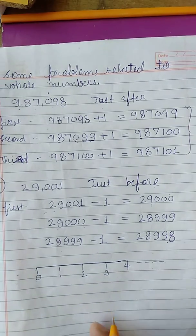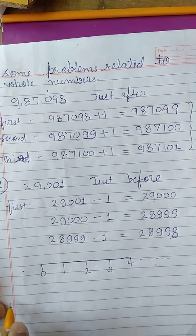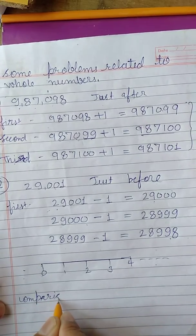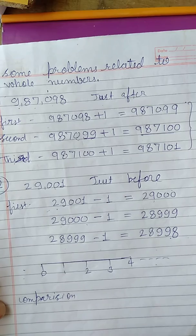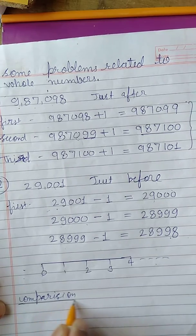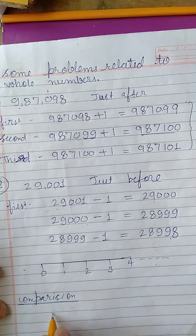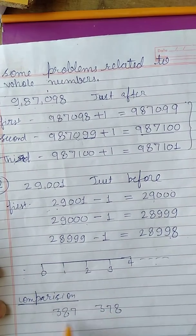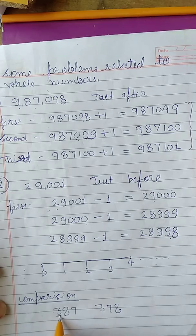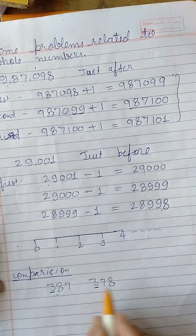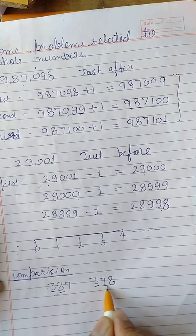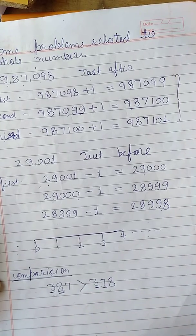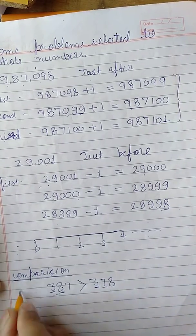Sometimes it is asked which number is greater and which is smaller — that is called comparison. To compare two numbers, we start from the left-hand side. For example: 3871 and 3780. The first digits are both 3 — same. The second digits are 8 and 7 — eight is greater, so 3871 is the greater number.